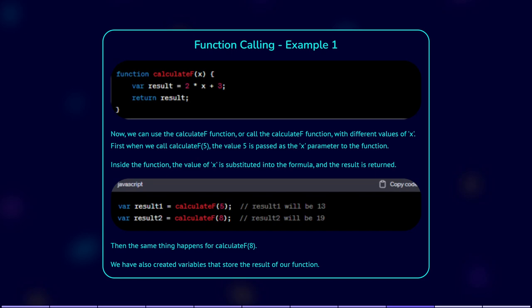First, when we call calculateF(5), the value 5 is passed as the x parameter to the function. Inside the function, the value of x is substituted into the formula, and the result is returned. The same thing happens for calculateF(10). We have also created variables that store the result of our function.